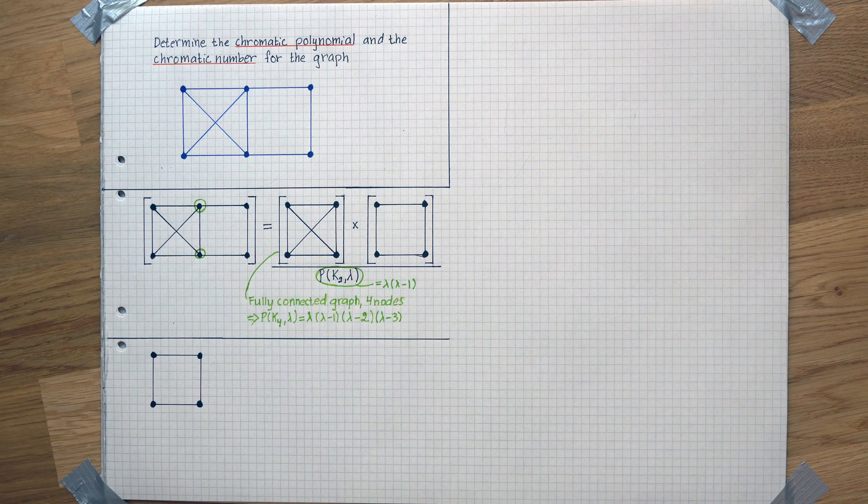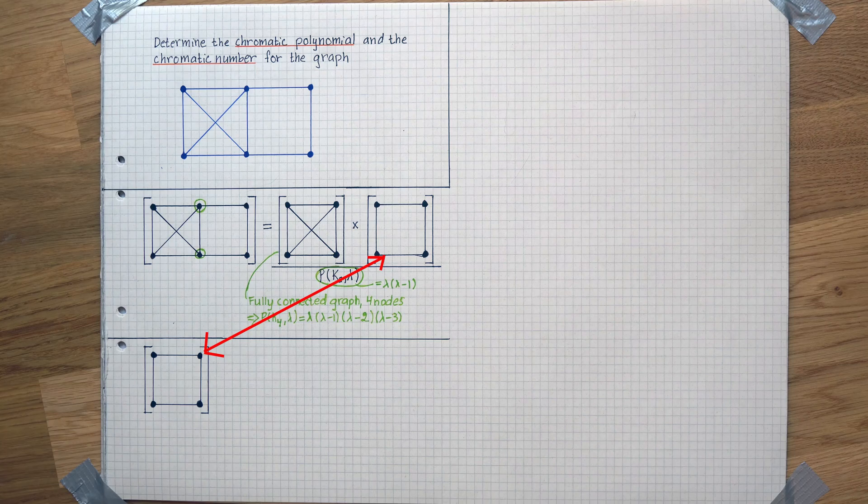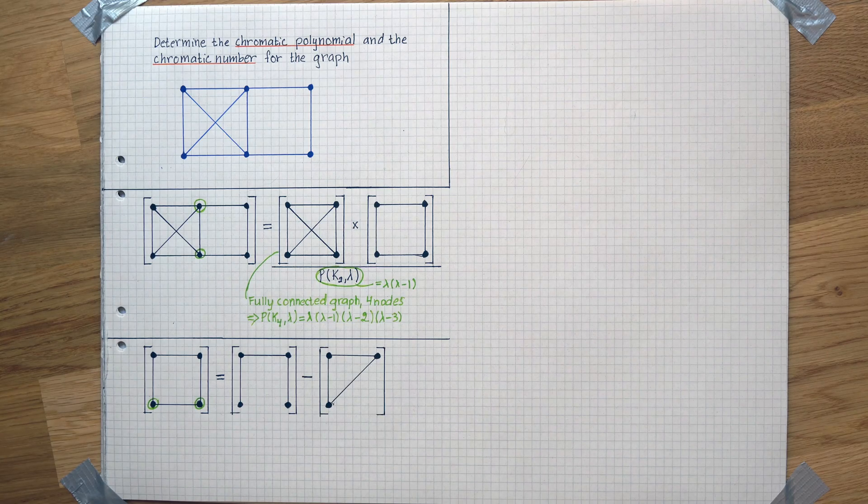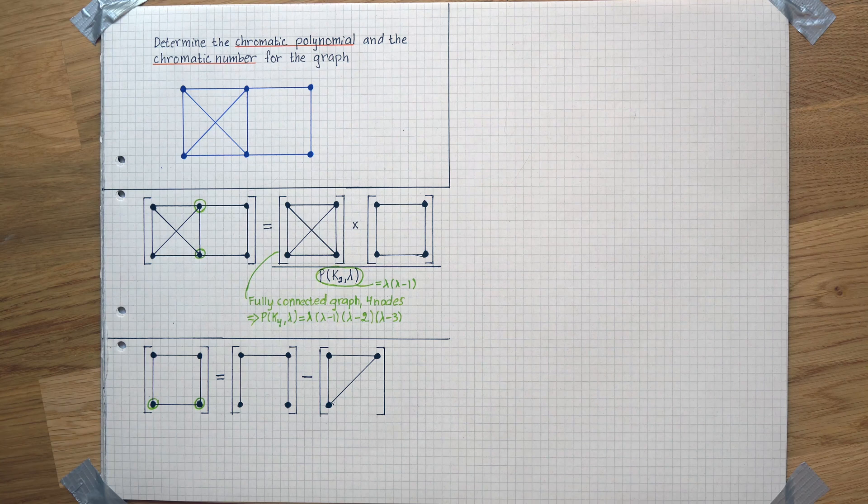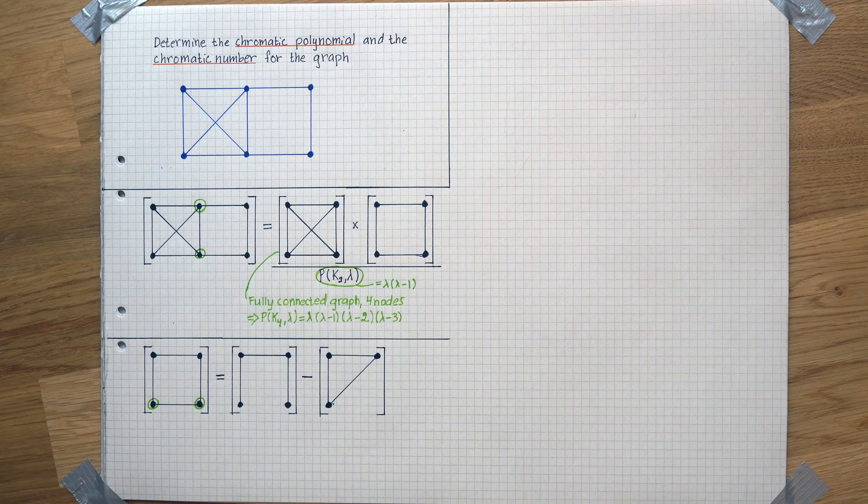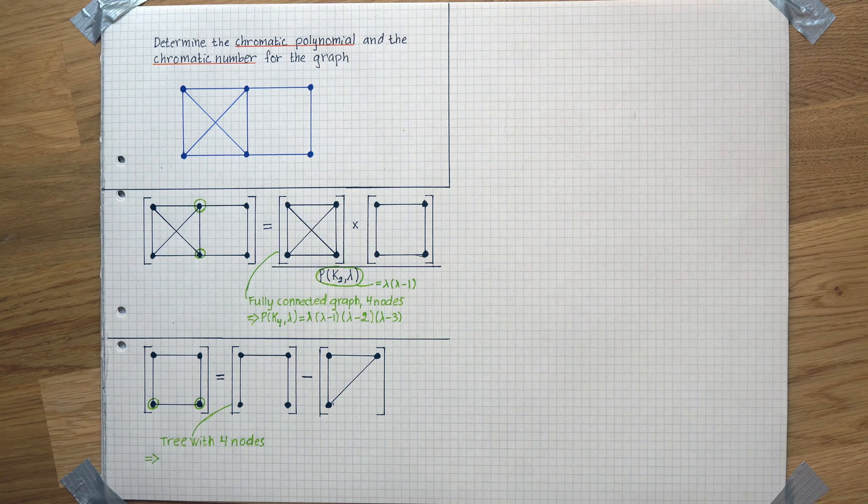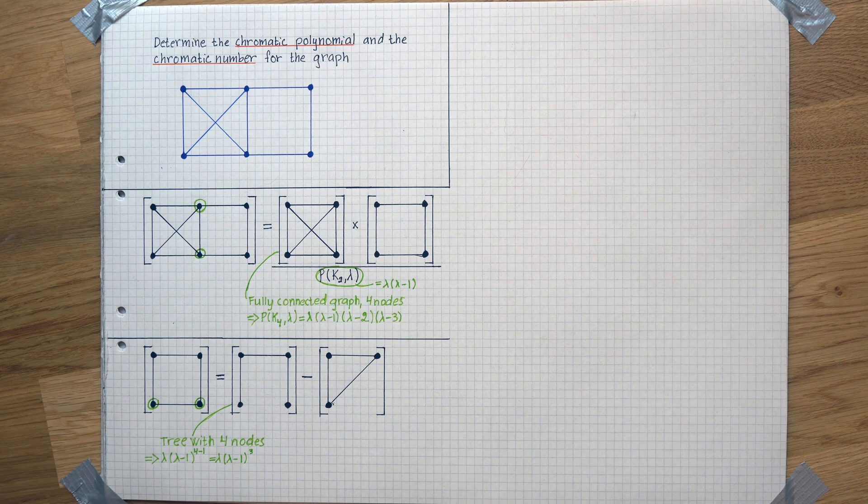Now, let's continue with this unfinished business. We'll take this graph and remove the connection between these two nodes. You are allowed to do that if you then subtract the same graph, but with those same nodes conjoined instead. This is going to give you a tree with four nodes that can be represented as lambda times lambda minus 1 to the power of the number of nodes minus 1.